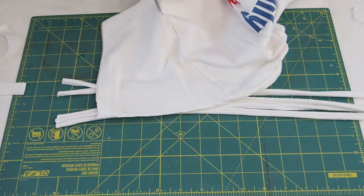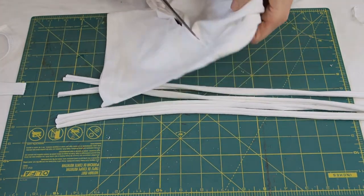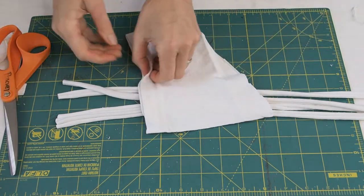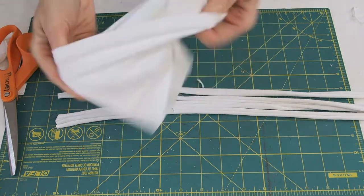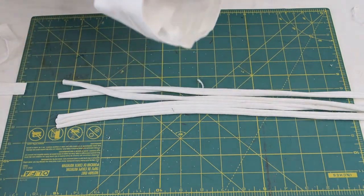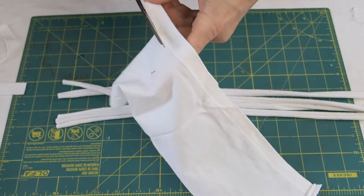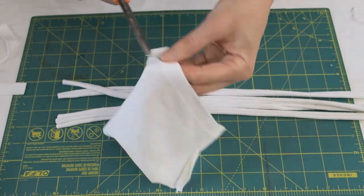We're going to take the sleeve of the t-shirt that we just cut. Cut that off of the rest of the shirt. And then we're going to cut off that sleeve hem that you see that's on the edge of the sleeve of your t-shirt. You cut that off and then we're going to use that for the next part of our headband.